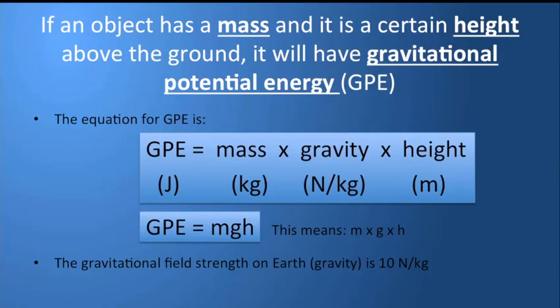To work out gravitational potential energy: if an object has a mass and it's a certain height above the ground, it will have gravitational potential energy because gravity has the potential to pull it back down to earth, and it would release energy as it does that.